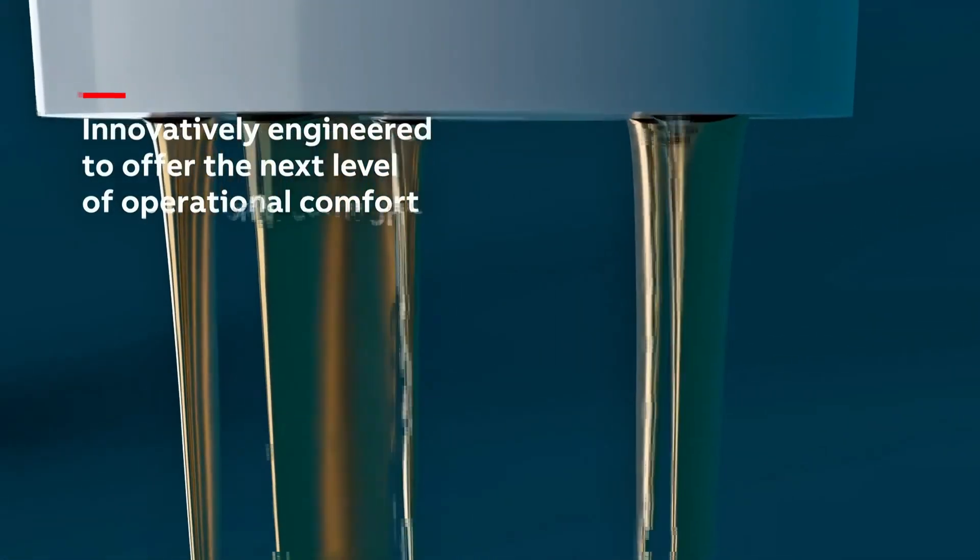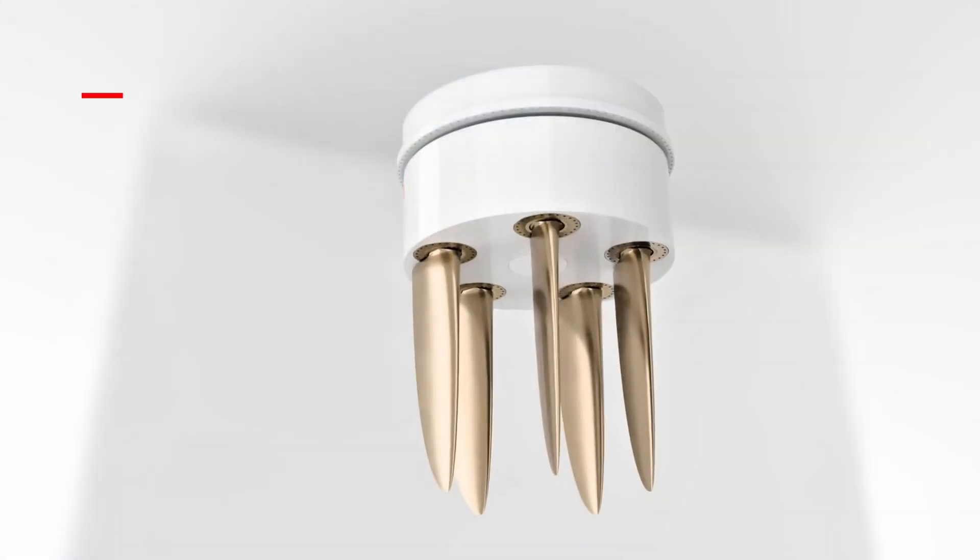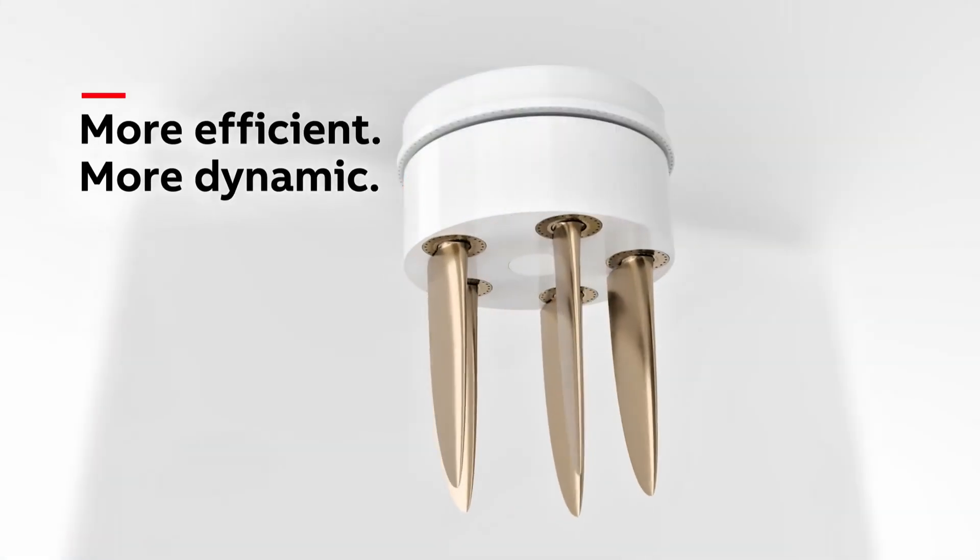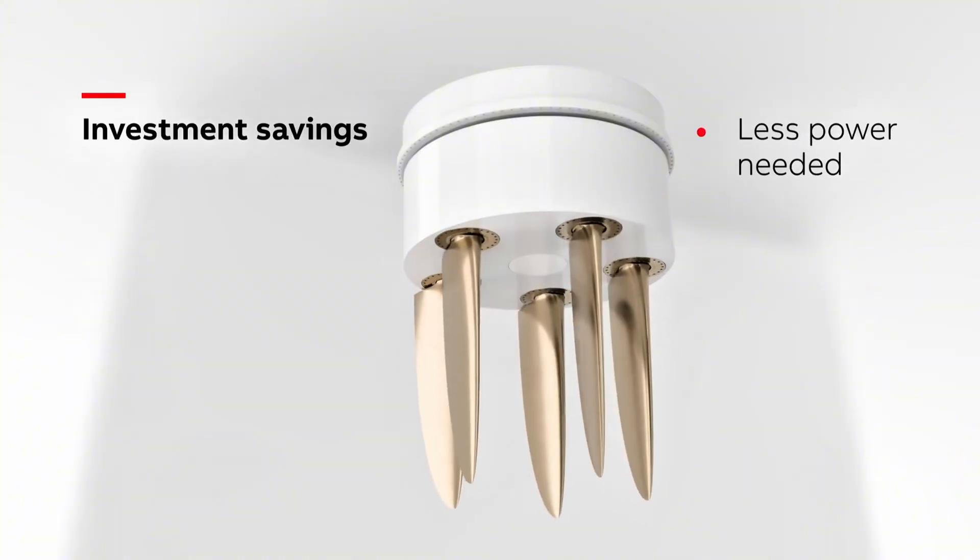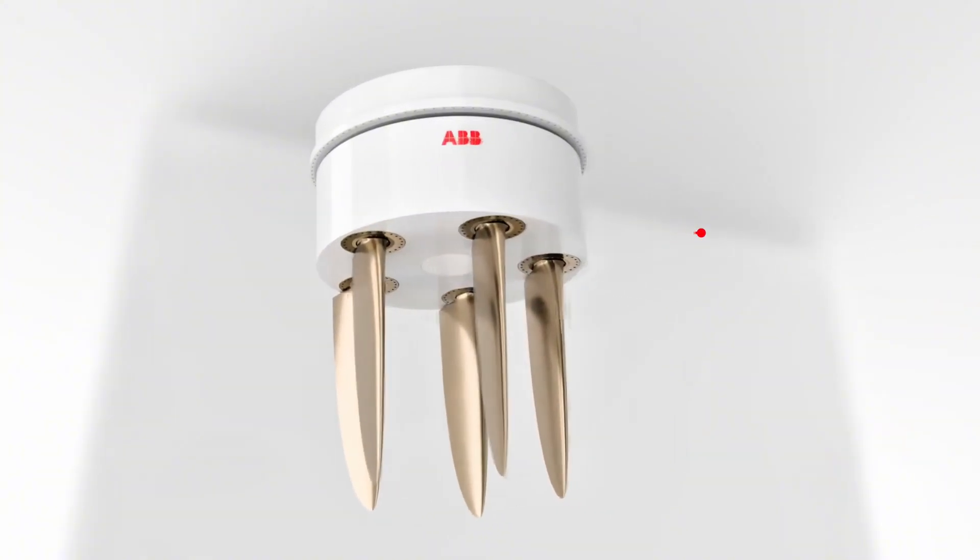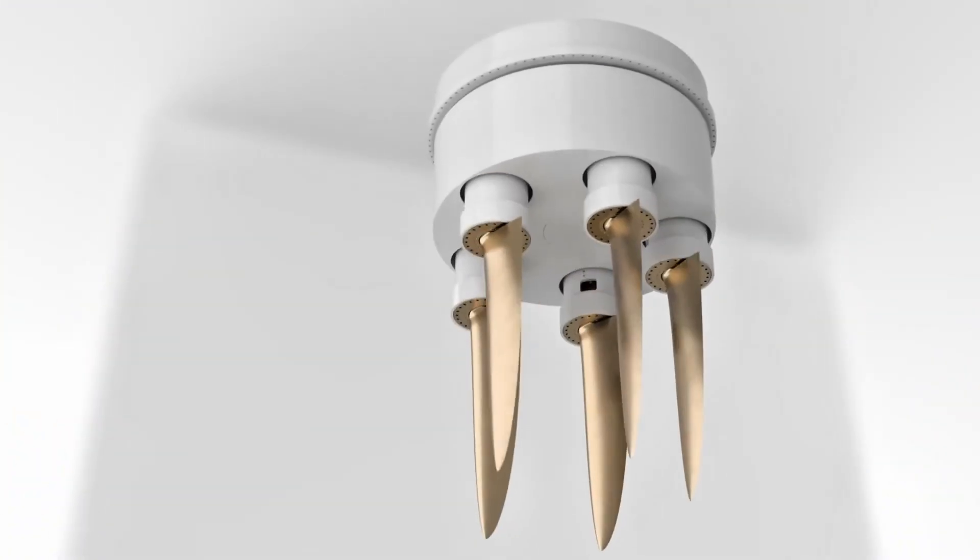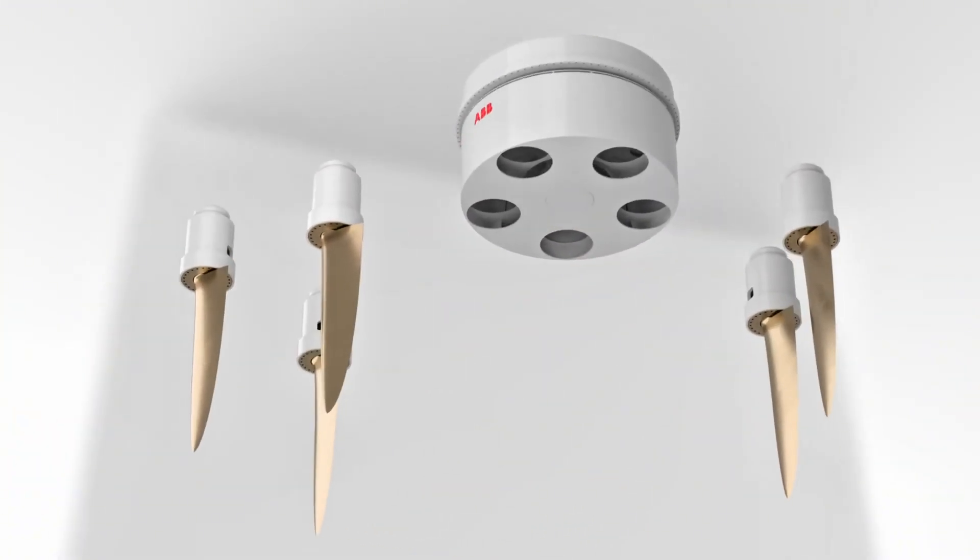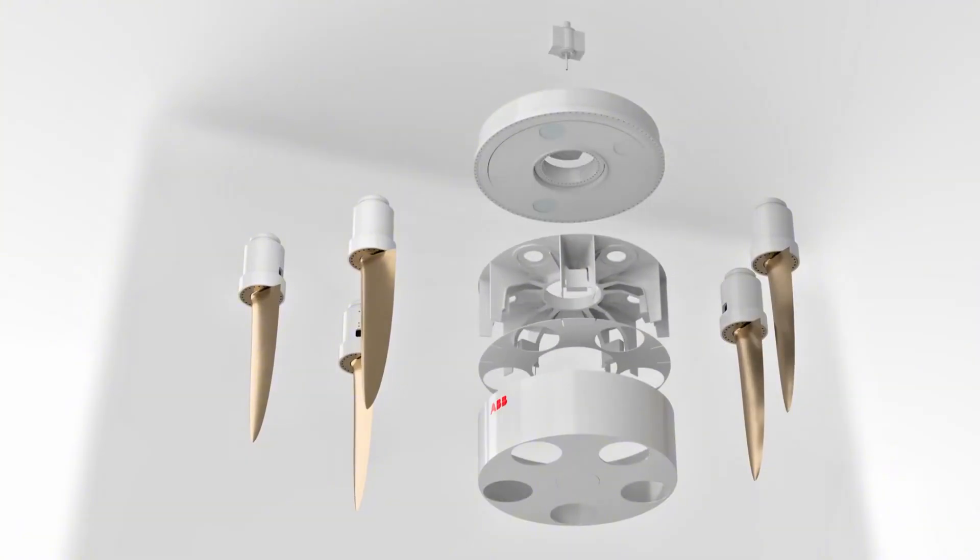Each blade even has its own little motor and brain, so the ship can steer and push at the same time with no separate rudder. ABB claims Dynafin can reach up to 85% efficiency, delivering huge fuel savings. Imagine docking a ferry with almost no fuss and a smaller fuel bill. That's the promise of this new cycloidal tech.